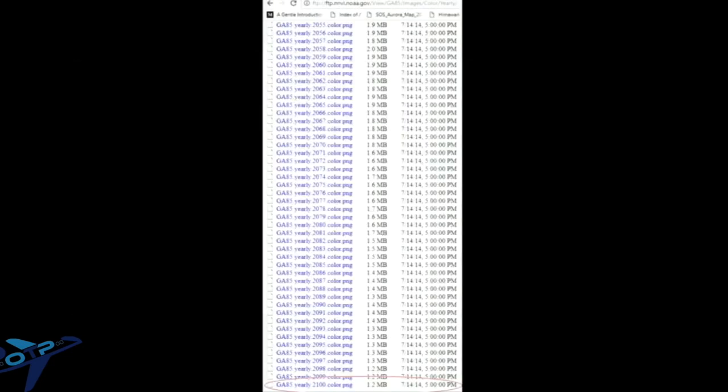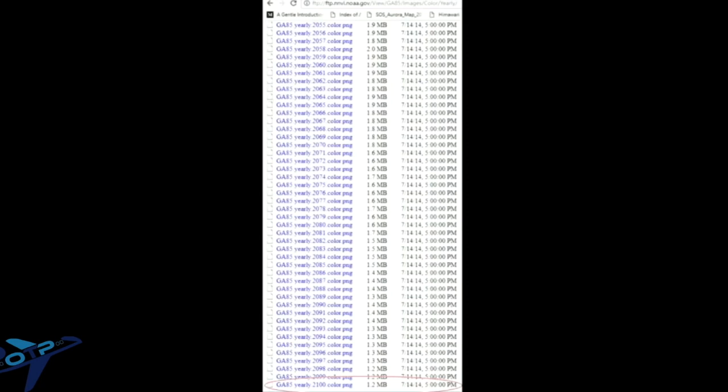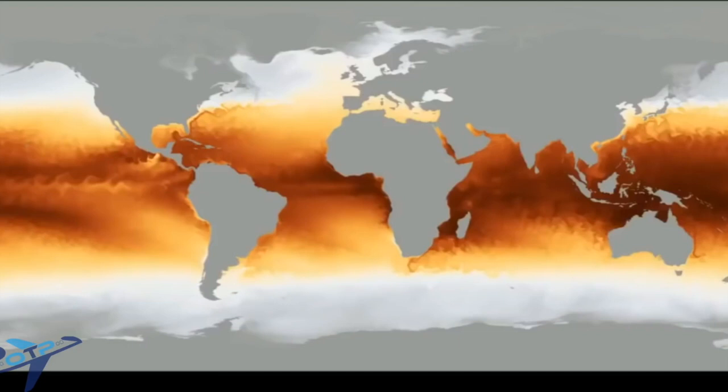But it's actually the year 2100 on this FTP server folder and here is one of the images. And following some of the other images that you can find where the land masses are transparent and they use all this simulation software to come up with the weather over the oceans.